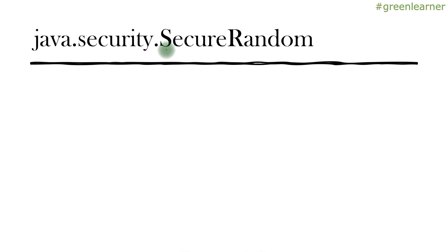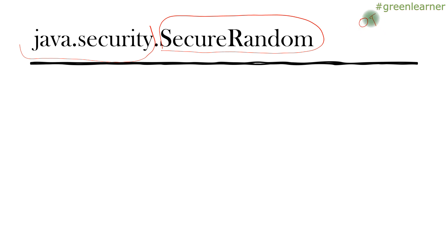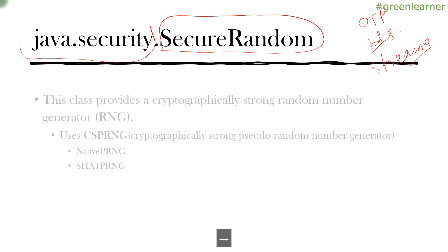SecureRandom is the class in the java.security package which helps in generating secure random numbers. Some prominent use cases for random number generation are OTP generation and random IDs you want to create for your employee database. Another use case is streams of integers that you want to post to an application — this random number generator class will help you generate that as well.